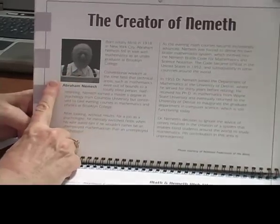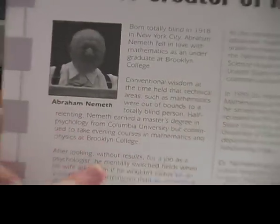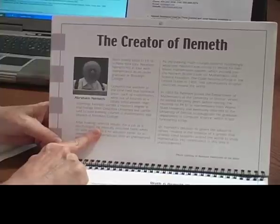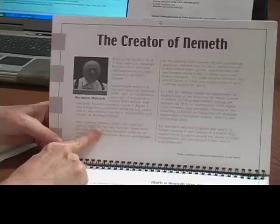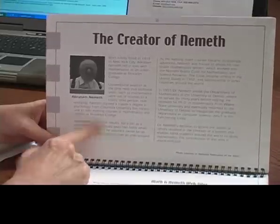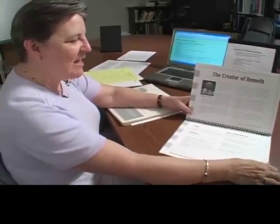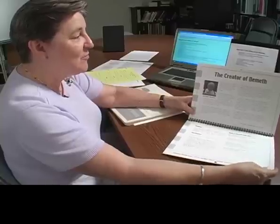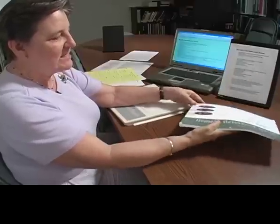On the next-to-last page there's a picture of Dr. Abraham Nemeth, who is the creator of Nemeth Code. It gives you the story about how he was born totally blind in 1918 in New York City, and how Abraham Nemeth fell in love with mathematics as an undergraduate at Brooklyn College. He is the creator of the Nemeth Code, and we are so thankful for it. This chart is available from the National Braille Press.